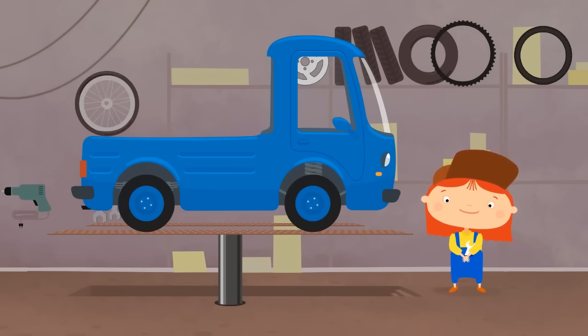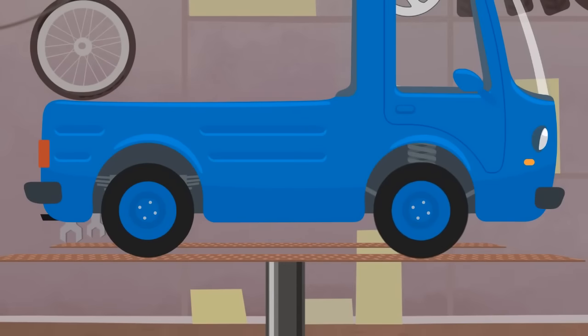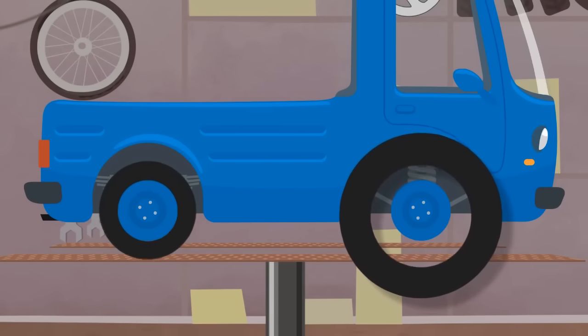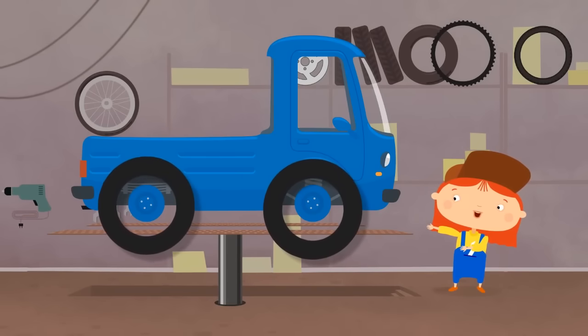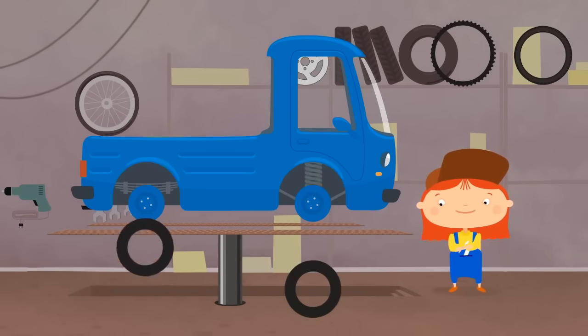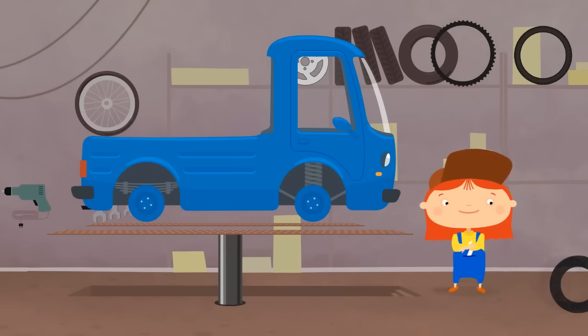First take off the summer tires. One. Two. Let's put them in storage until spring. Look, the treads on the summer tires are small and the grooves shallow. So the tires can't grip on ice.